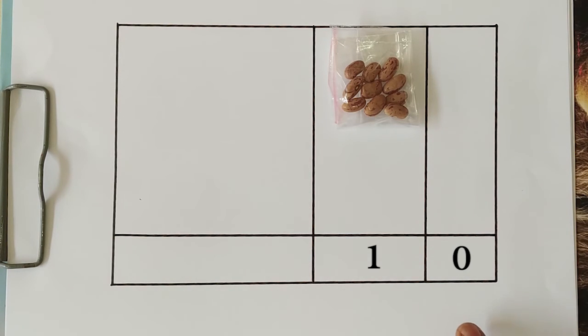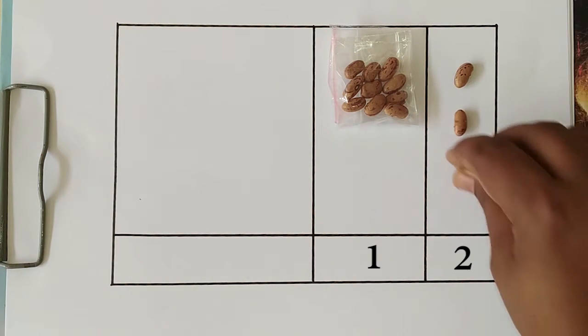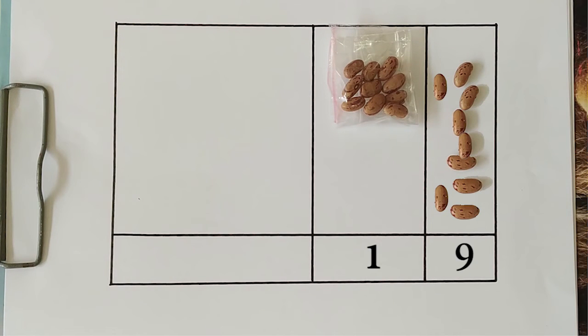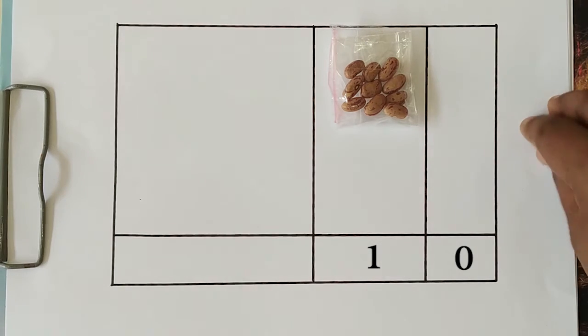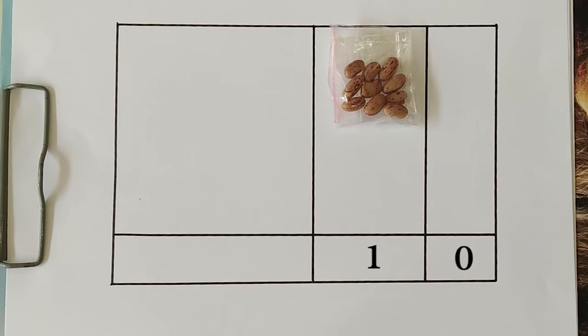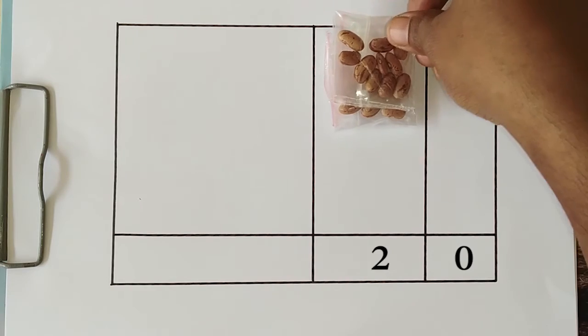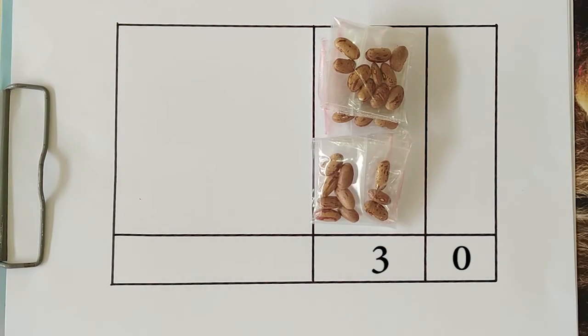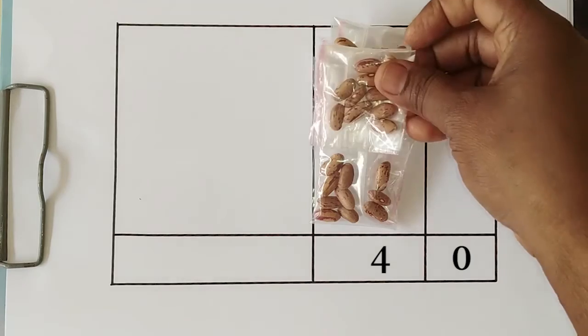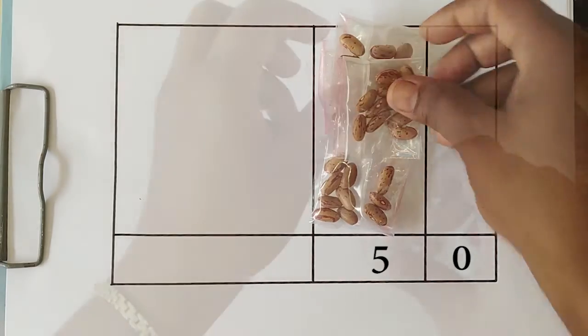After this, we again add the beans one by one on the right side and we get 11, 12 etc. Once we have 19, then when we add one more bean, we again put it inside a bag and move it to the left. That is how we get 20. In a similar manner, as we go to higher and higher numbers, we get 30, 40, 50, 60 etc. And slowly we reach 90.